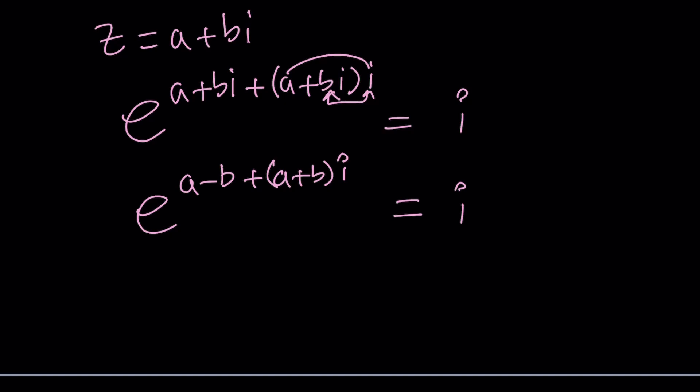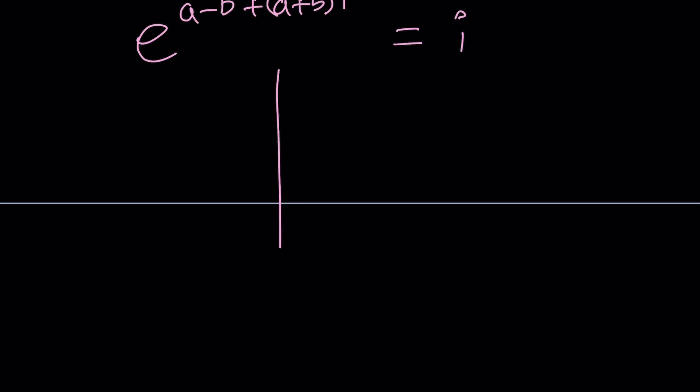If you consider the argon diagram, on the argon diagram i will be represented by zero plus i or zero comma one right here, a point on the imaginary axis because this is real that's imaginary one unit away from zero that's our i.